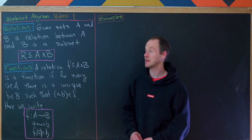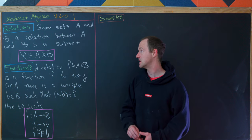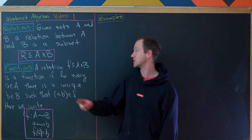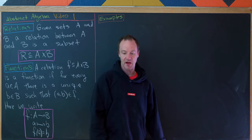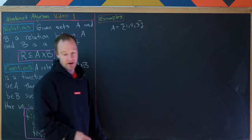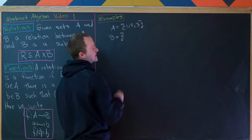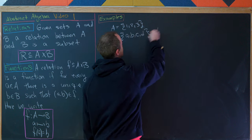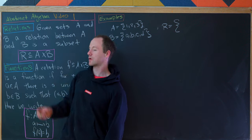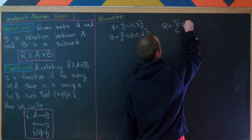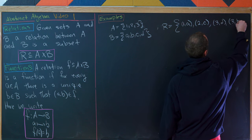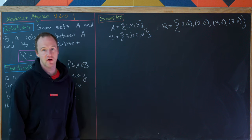Let's first look at the notion of a relation. Given sets A and B, a relation between A and B is a subset of A cross B — that's simply all you need for it to be a relation. For example, let A be the set {1, 2, 3} and B be the set {a, b, c, d}. Then we take the set R made up of ordered pairs with first entry from A and second from B: (1,a), (2,c), (3,d), and (3,b). That's a subset of A×B, so it is a relation.